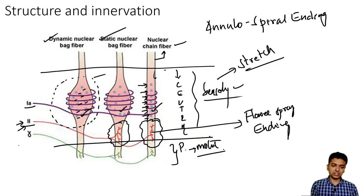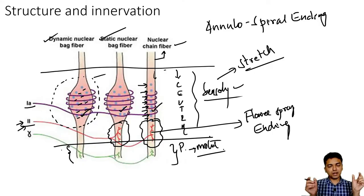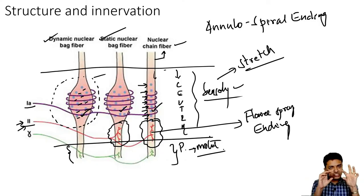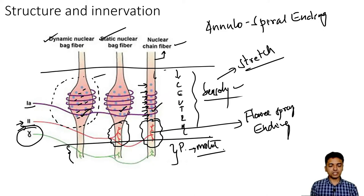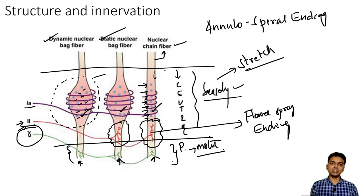We also have the motor innervation, and the motor innervation is to the peripheral part because the peripheral part is a contractile part. Whenever the peripheral part is contracting — that is, becoming shorter — it is stretching the central part. The nerve innervating the peripheral part is the gamma motor neuron, and the gamma motor neuron is going to innervate all three: the dynamic nuclear bag fibers, the static nuclear bag fibers, as well as the nuclear chain fiber.